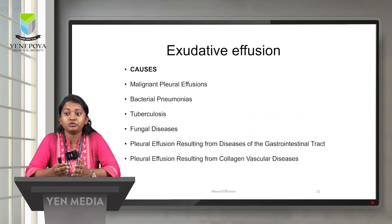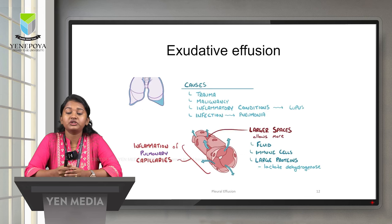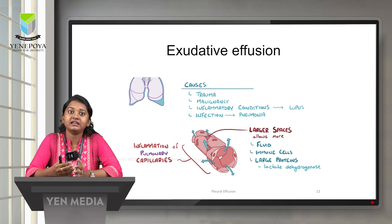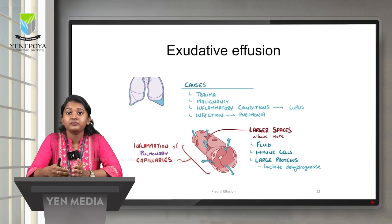Next is exudative effusion. The causes of exudative effusion include malignant pleural effusion, bacterial pneumonias, tuberculosis, fungal disease, pleural effusion resulting from disease of the gastrointestinal tract, and pleural effusion due to collagen vascular disease. Exudative effusion is caused by inflammation of the pulmonary capillaries — they become infected and inflamed, creating larger spaces in the endothelial lining. Because of these larger spaces, more fluid, immune cells, and large proteins like LDH can leak out of the capillaries. Exudative effusion is caused by trauma, malignancy, inflammatory conditions, and infection.